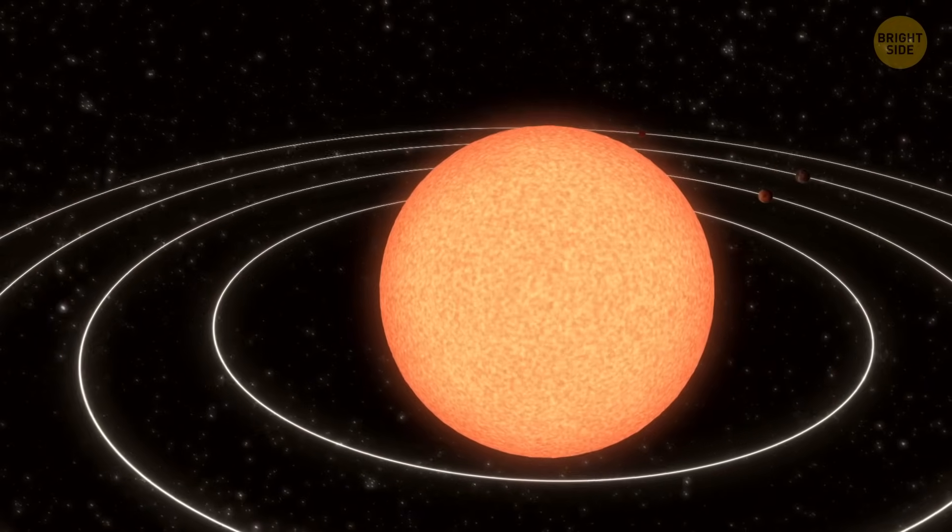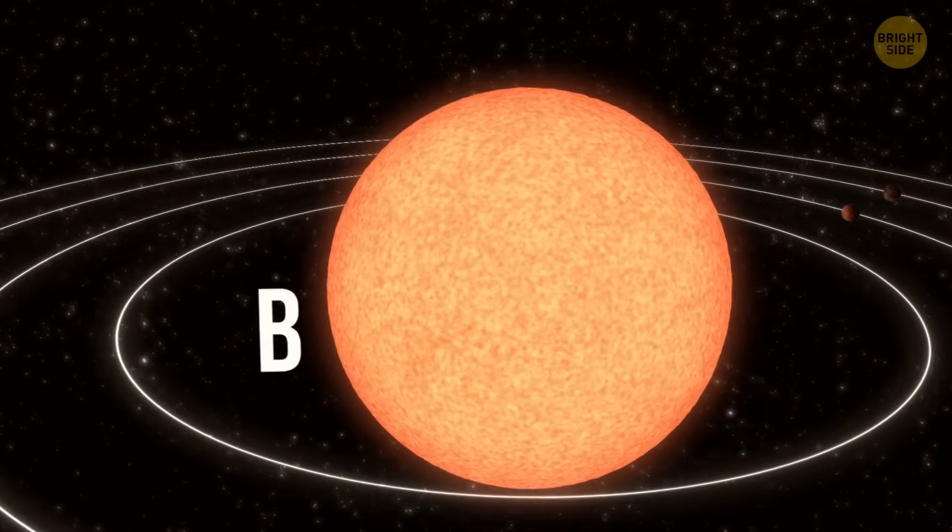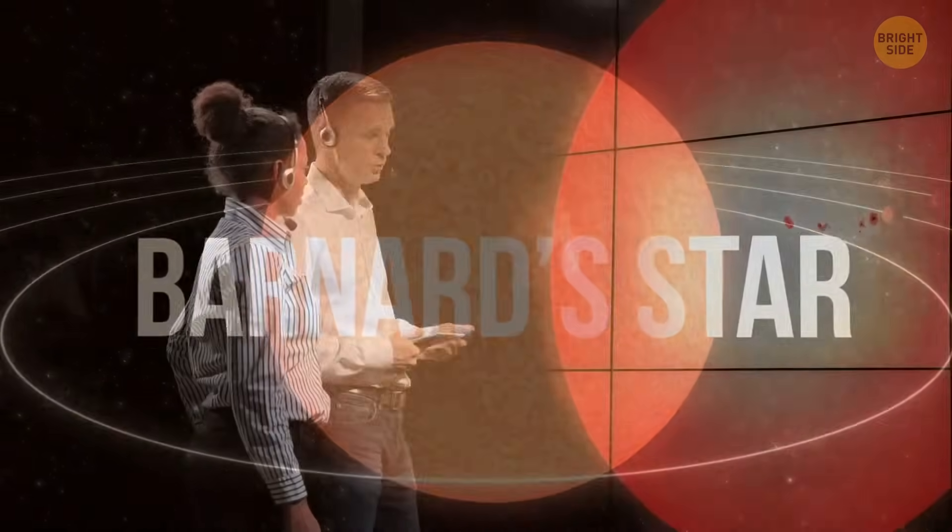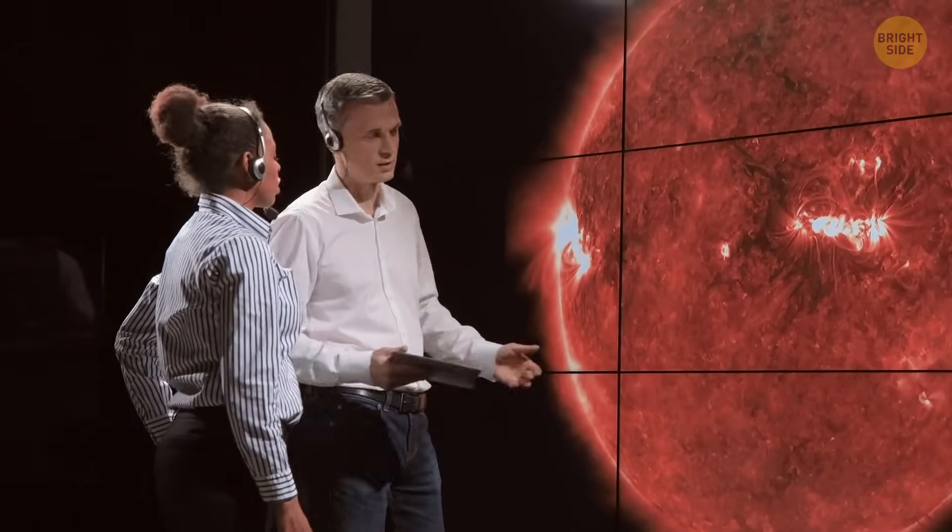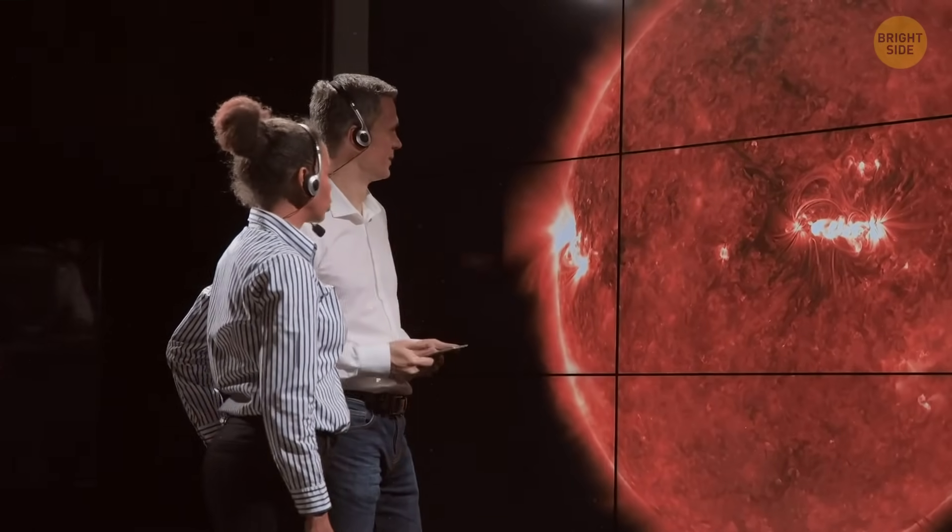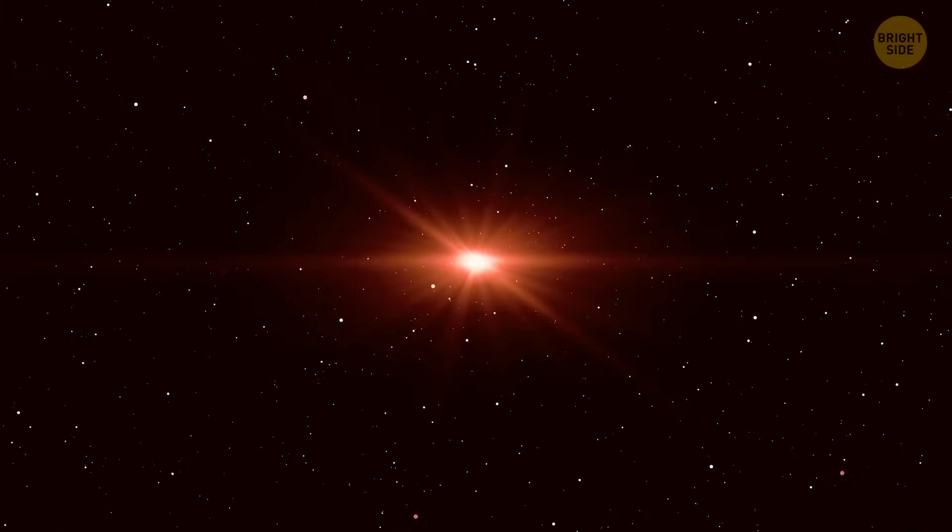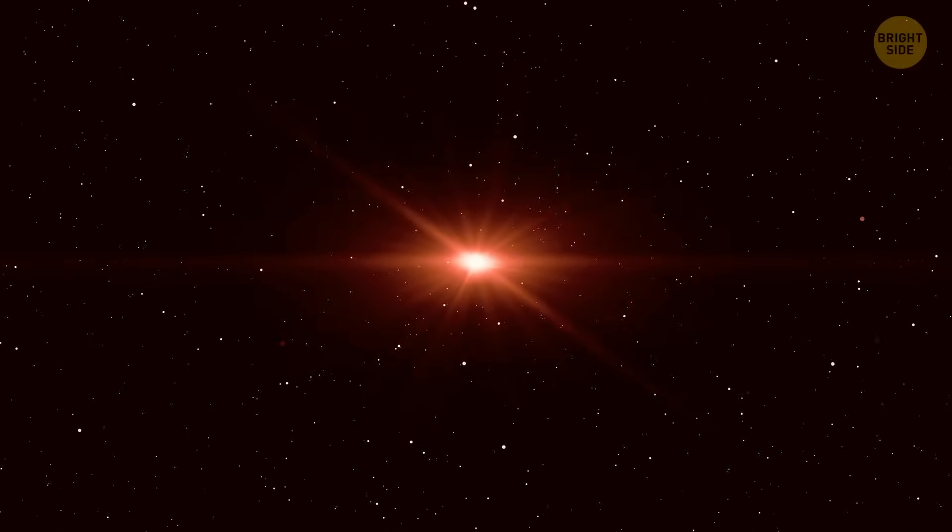Now, what about that star these little guys are circling? It's called Barnard's Star. Astronomers have always had a hunch there might be at least one planet orbiting it. First off, this star is super close, in cosmic terms of course.